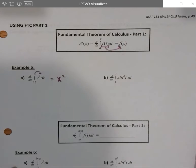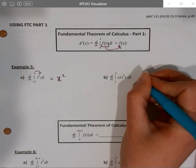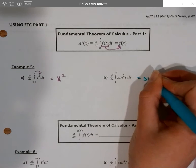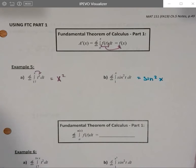So if I wanted to take the derivative of the antiderivative from 1 to x of sine squared t dt, it's going to be sine squared x. All right, that's it.